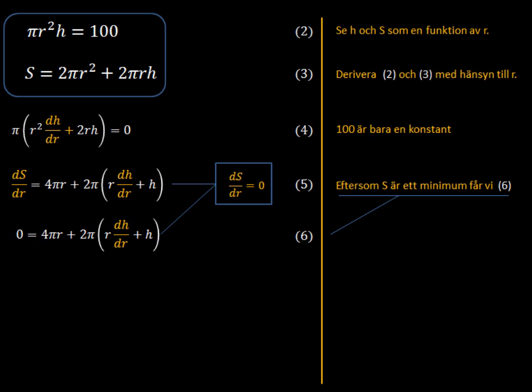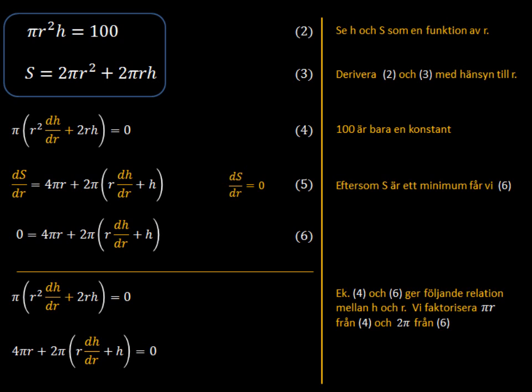We want the minimum for the derivative of S, the surface area. And we see that we have both sides, both equations here, four and six, are going to be equal to zero. And we're going to use that to our advantage in just a few steps here.